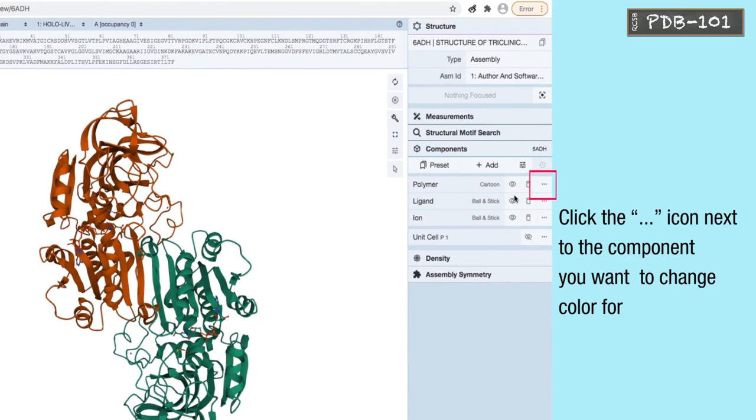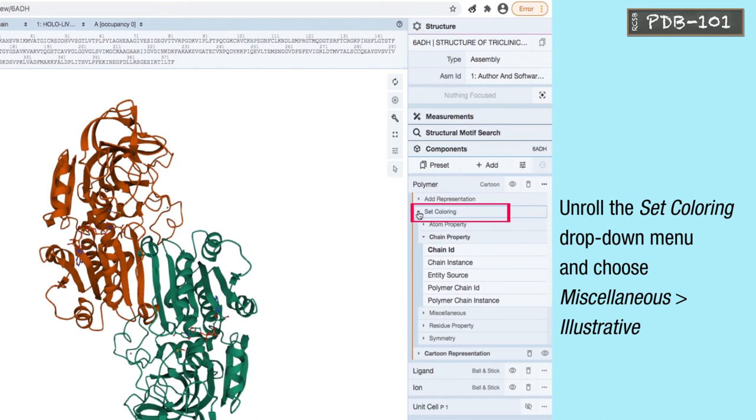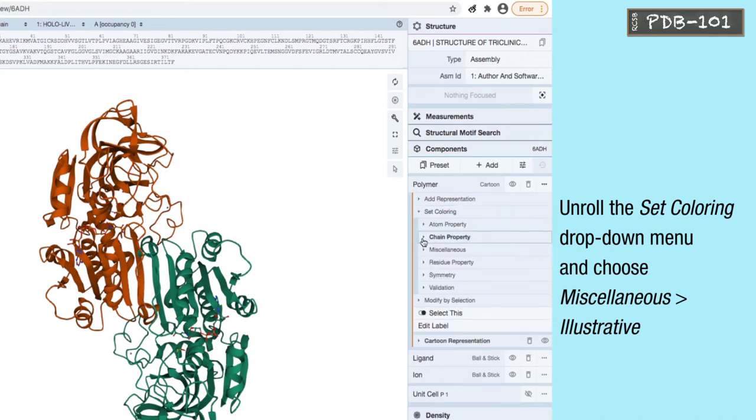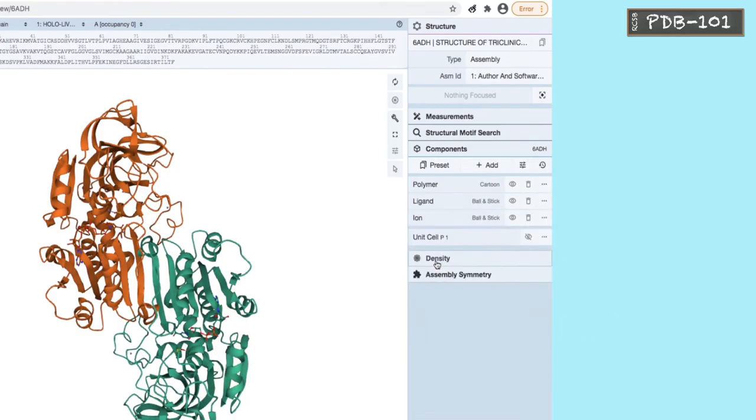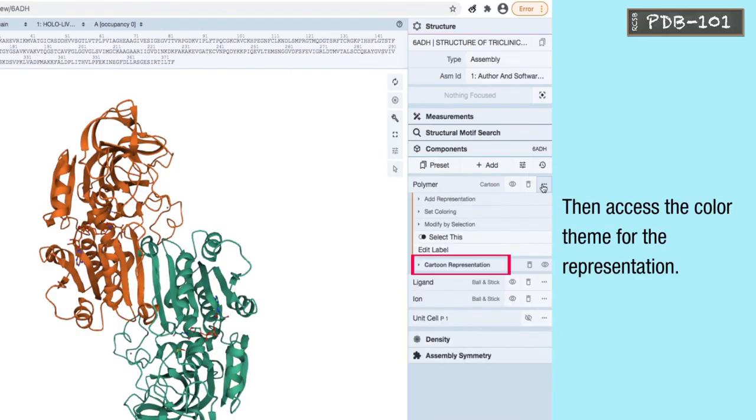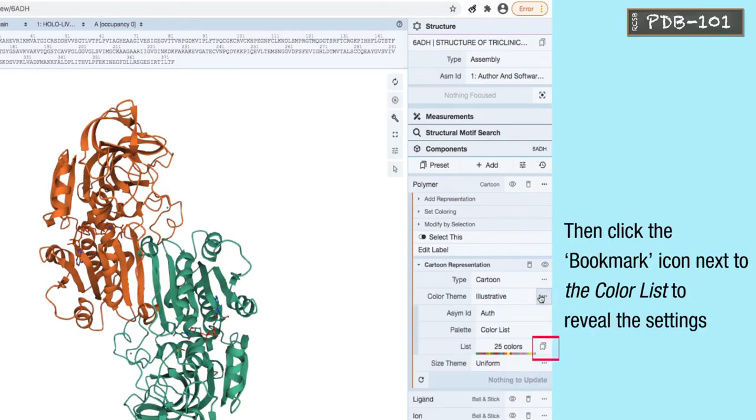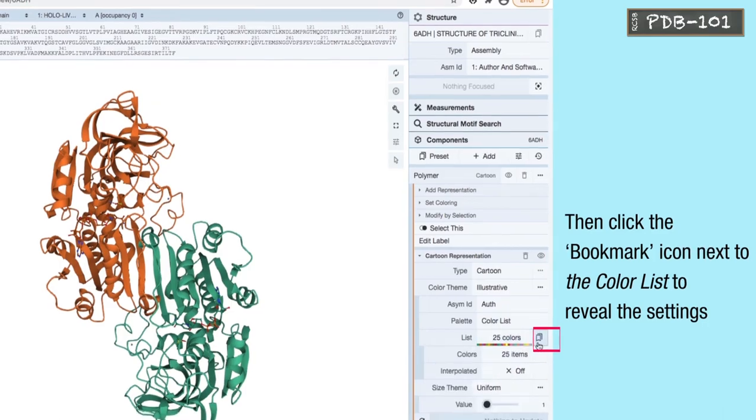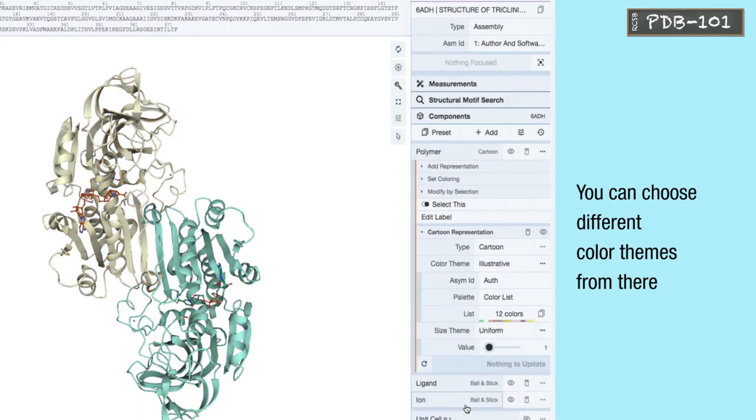Click the 3 dots icon next to the component you want to change the color for. Unroll the set coloring drop down menu and choose miscellaneous, then illustrative, then access the color theme for the representation. Click on the 3 dots icon next to the color theme, then click the bookmark icon next to the color list to reveal the settings. You can choose different color themes from there.